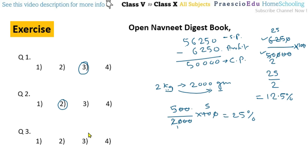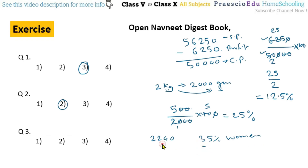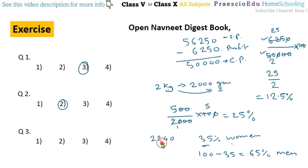Question number 3: For the annual general meeting of Utkarsha Cooperative Society, out of 2240 members, 35% were women shareholders present. If 100% shareholders were present, how many men shareholders attended? First, we calculate the percentage of men: 100% minus 35% equals 65% are men. There are two ways to solve this — find 65% of total directly, or find the women's number and subtract.